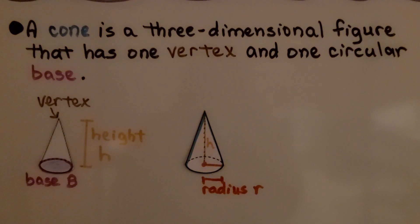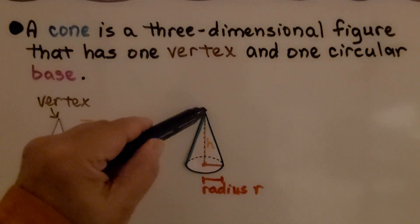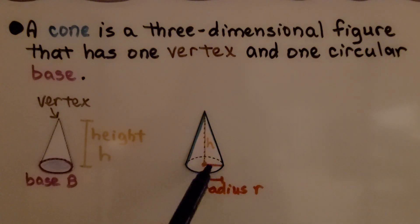A cone is a three-dimensional figure that has one vertex and one circular base. Here's the base, here's the vertex. Its height is the distance between the vertex and the base perpendicular. From the center of the base, the height goes up to the vertex. We can see the radius r.